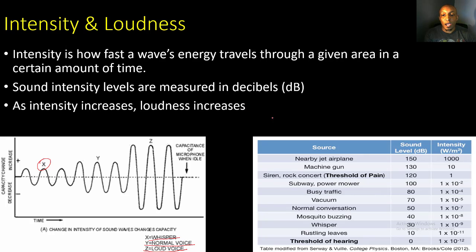Here's a chart showing sound levels in decibels: rustling leaves at 10, a whisper at 30, mosquito buzzing at 40, normal conversation at 50, a vacuum at 70, busy traffic at 80, a subway or power mower at 100. A siren or rock concert is at the threshold of pain — very high decibels. A machine gun is extremely loud, and a nearby jet airplane reaches 150 decibels — extremely intense and loud because the waves are larger and carry much more energy.